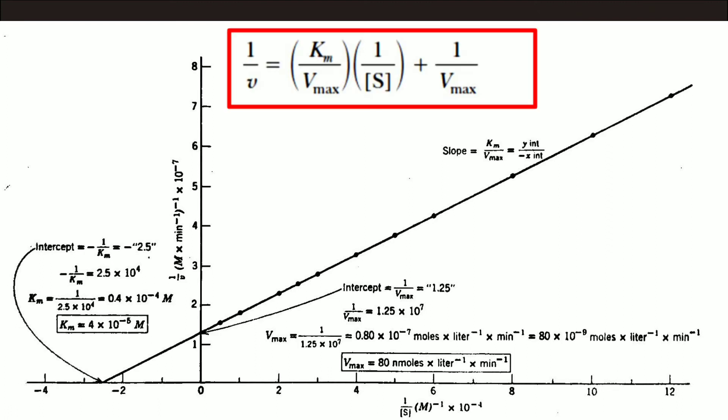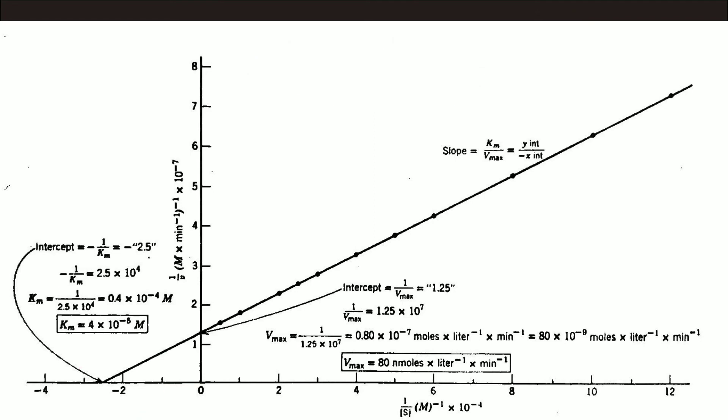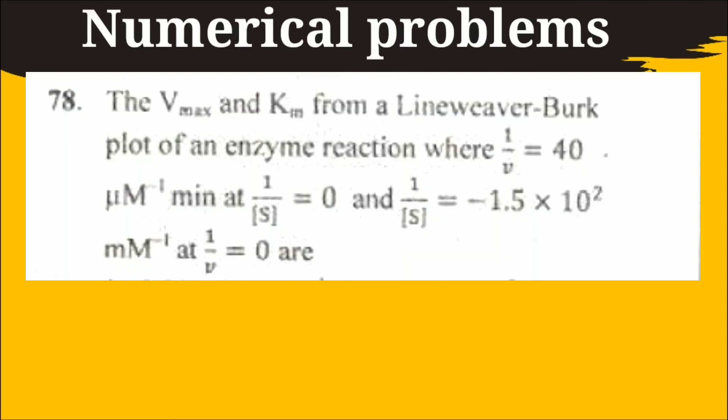And the plot of 1 by V0 versus 1 by S is double reciprocal plot or Lineweaver-Burk plot. Here the slope of the straight line is Km by Vmax and 1 by Vmax can also be calculated from y-axis intercept. And minus 1 by Km can also be calculated from x-axis intercept. It is good. But how to solve numerical problems and what are the types? Here is the first one.